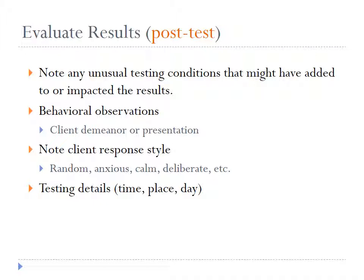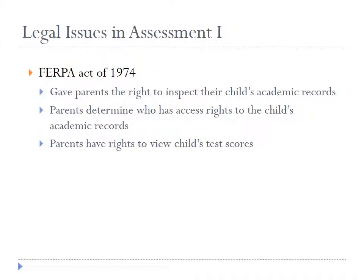Now that we've discussed ethical issues, I want to shift our attention to some legal issues. There have been a number of legal precedents and laws throughout the years that have a connection to or some type of influence on the testing and assessment process. The first legal precedent we could talk about is FERPA — the Family Education Right to Privacy Act. It came about in 1974, and basically FERPA gave parents the right to inspect their child's academic records. Schools no longer maintain the ability to hide or sequester a student's records from his or her parents.